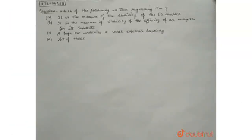Hello friends, our question is which of the following is true regarding KM? Option A, it is the measure of the stability of the ES complex. Option B, it is the measure of stability of the affinity of an enzyme for its substrate. Option C, a high KM indicates a weak substrate binding. And option D, all of these.